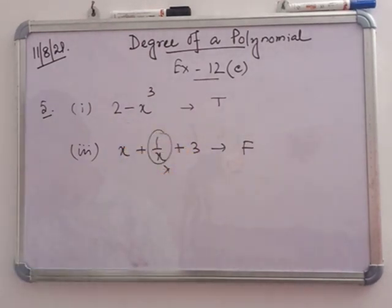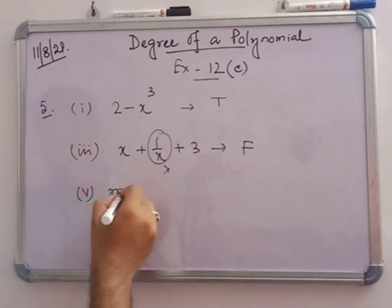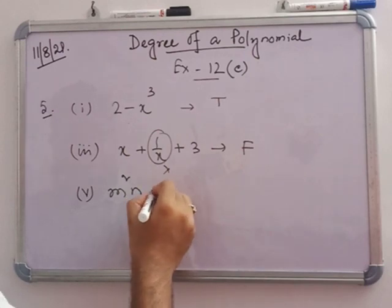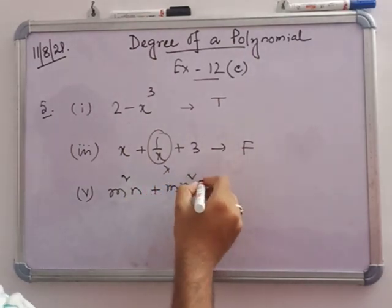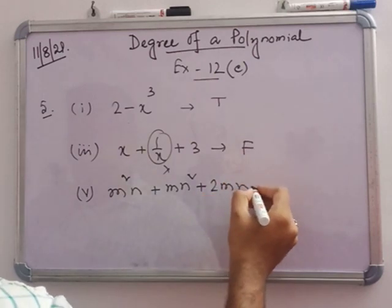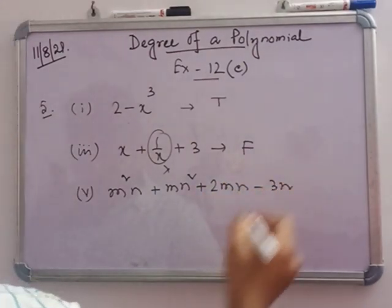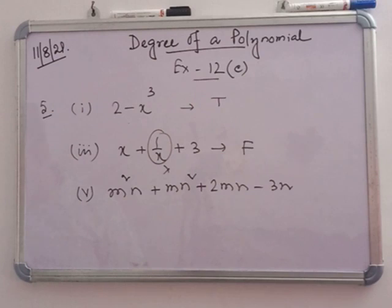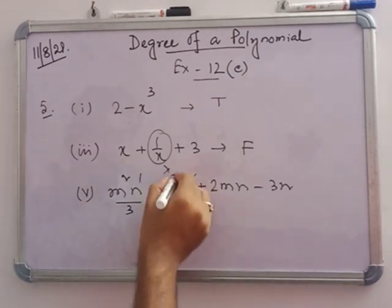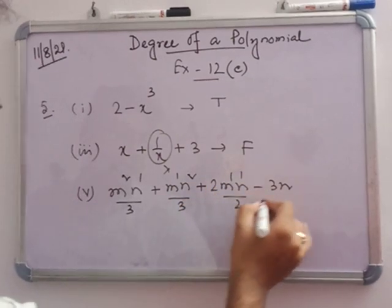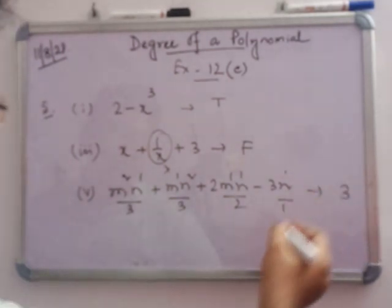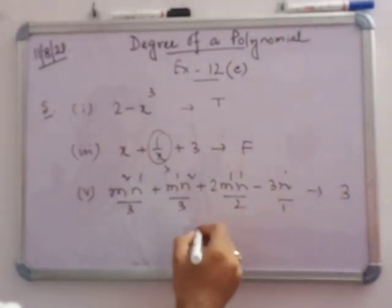Number 5: 'm squared n plus mn squared plus 2mn minus 3n is a polynomial of degree 3.' The powers sum to 3, 3, 2, and 1 respectively. The highest is 3, so the degree is 3 — this statement is true.